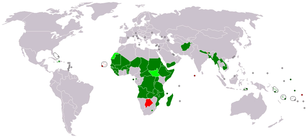Kofi Annan, former Secretary General of the United Nations, defined a developed country as 'one that allows all its citizens to enjoy a free and healthy life in a safe environment.' Development can be measured by economic or human factors. Developing countries are, in general, countries that have not achieved a significant degree of industrialization relative to their populations, and have, in most cases, a medium to low standard of living.